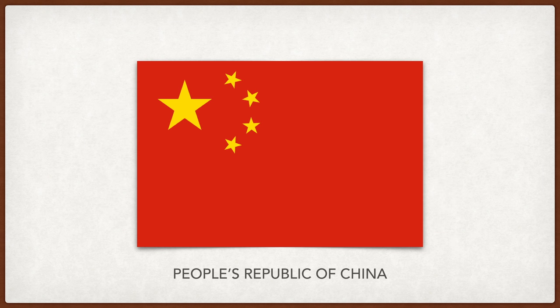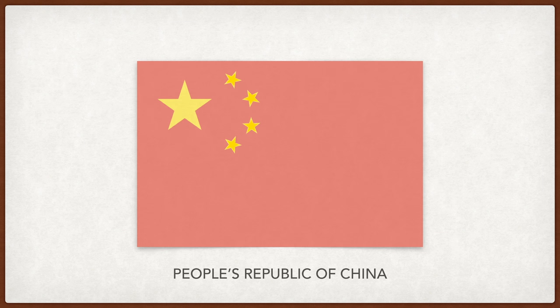China. The red represents the communist revolution, and the four smaller stars represent the Chinese people uniting around the bigger star, which represents the communist party.